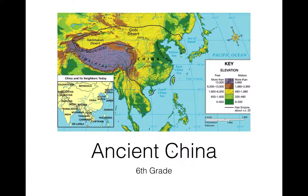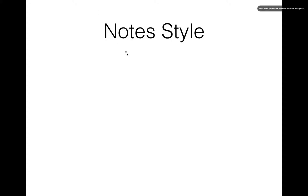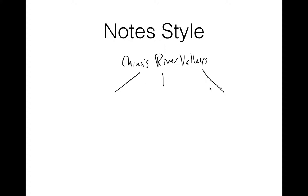Hello 6th graders, we're going to get right into our study of ancient China. For your note styles today, what I would like you to do is make a little bit of a three-column graph. It should be titled China's River Valleys. We are not going to talk much about geography since we've done a lot of that already. We'll touch on monsoons, then focus on civilization and the family and how important families are in ancient Chinese culture.